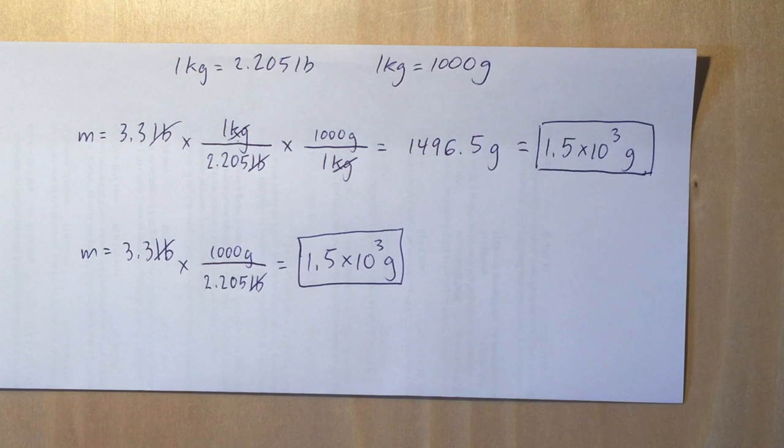So that means that the other things are equivalent to each other. In other words, the 2.205 pounds is equivalent to 1,000 grams.